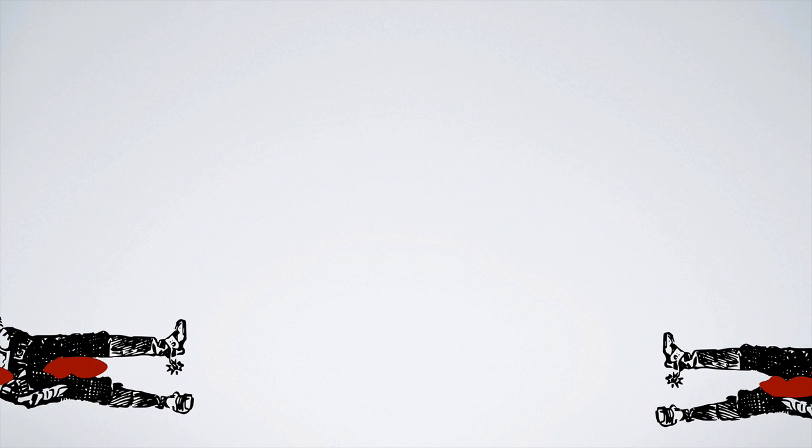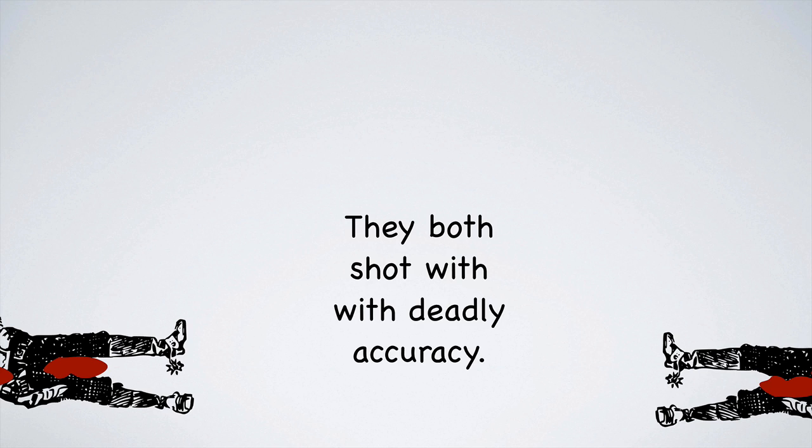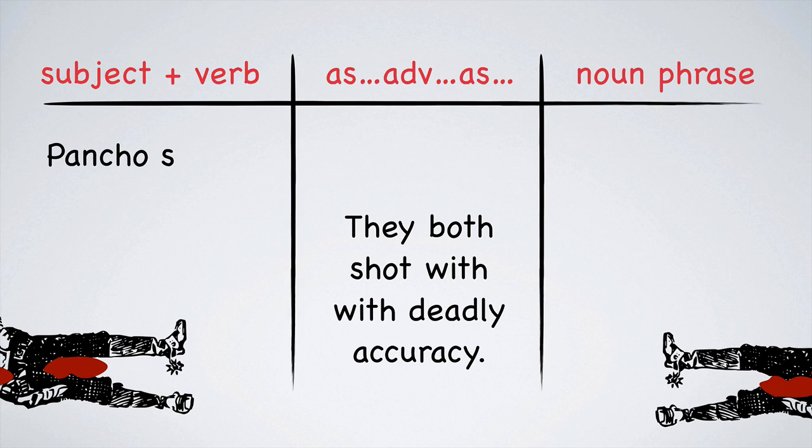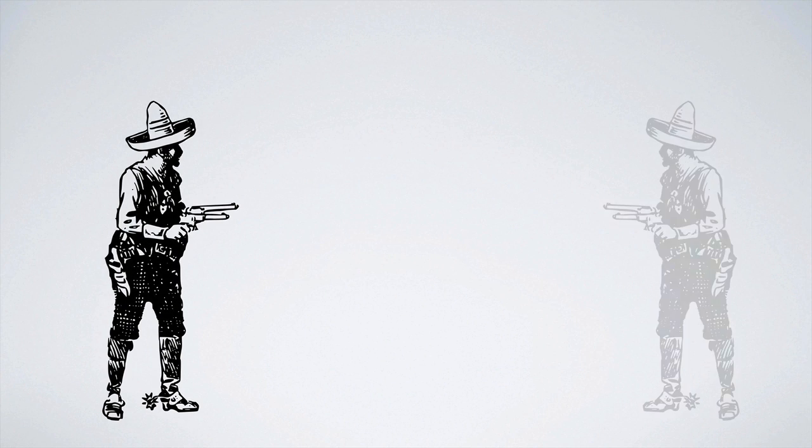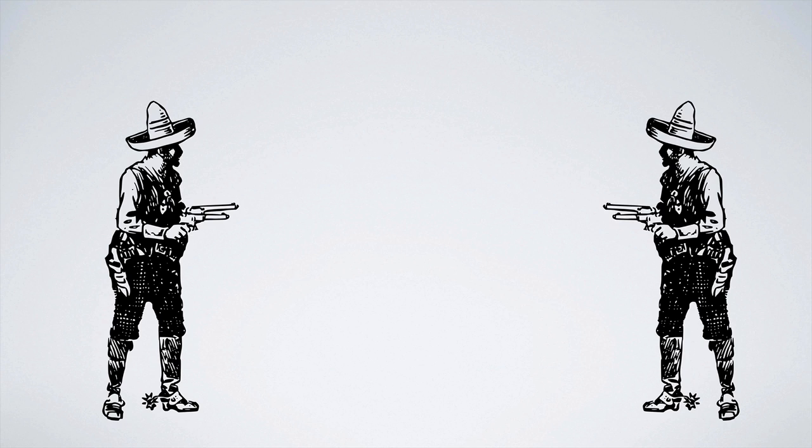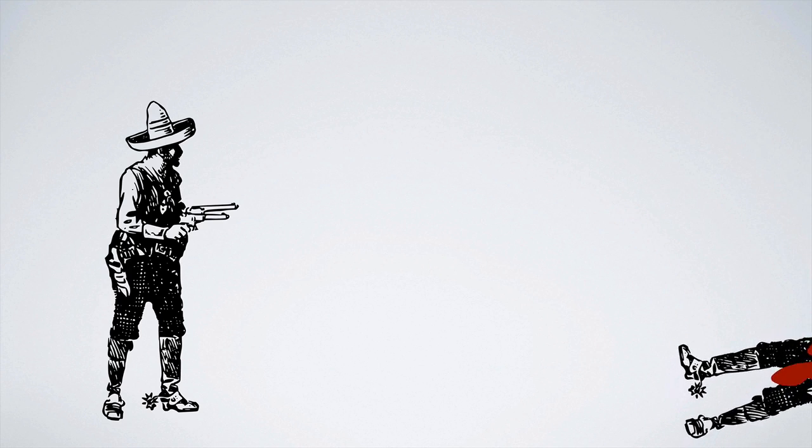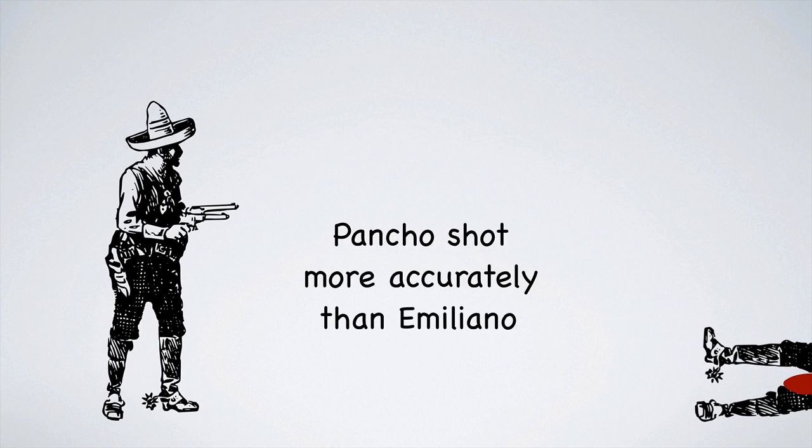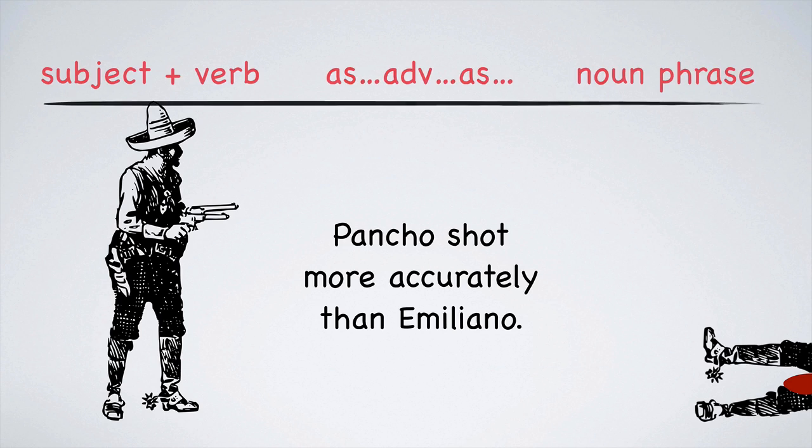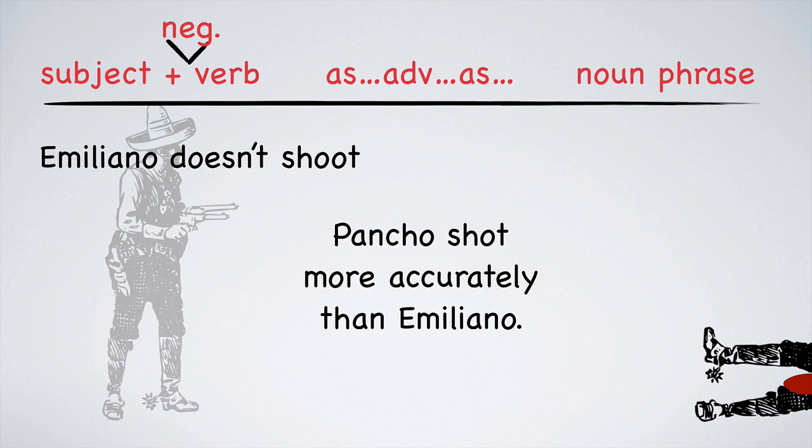Here's Poncho and this is Emiliano. They both shoot with deadly accuracy. Poncho shoots as accurately as Emiliano. Now they've both gone to the hospital and it's time for a rematch. Oh, you missed. This time, Poncho shot more accurately than Emiliano. So this is a comparison of inequality. It will be negative. Emiliano didn't shoot as accurately as Poncho.